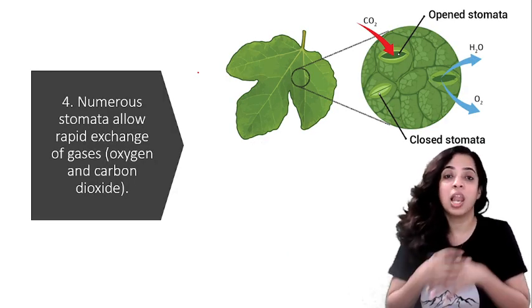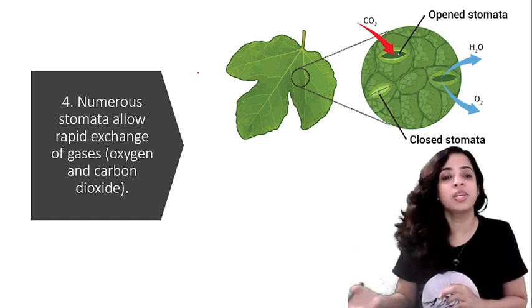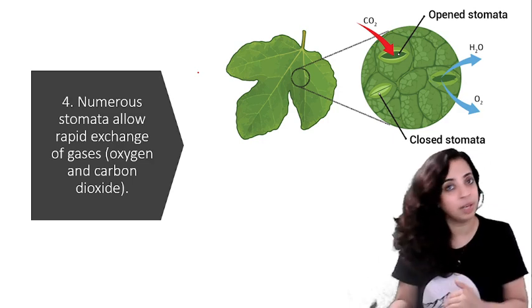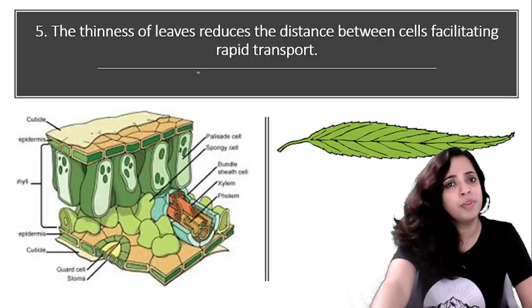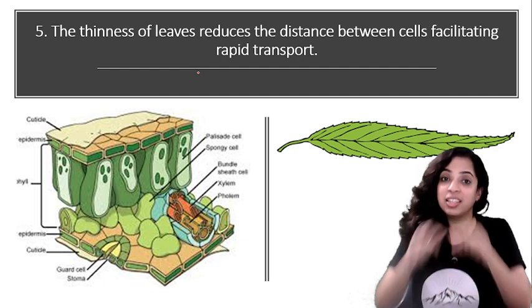The fourth adaptation is lots of stomata are there on the leaf. So numerous stomata allow rapid exchange of gases - that is oxygen and carbon dioxide - which is required for photosynthesis. The fifth point is the leaves are very thin.